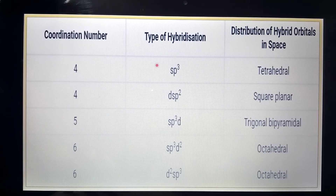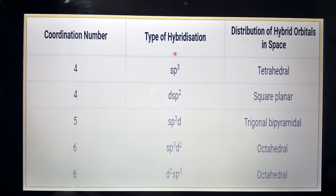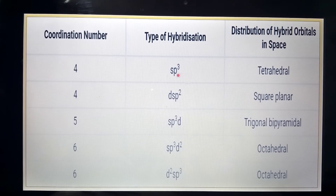Coordination number, types of hybridization, and distribution of orbitals in space: if the coordination number is 4 and we have sp3 hybridization, there are 1s and 3p orbitals combined, making the coordination number 4, and the geometry of that sp3 hybridized molecule will be tetrahedral.